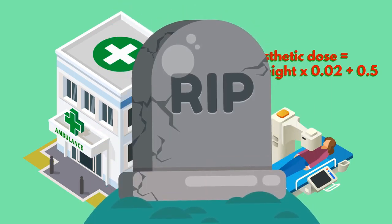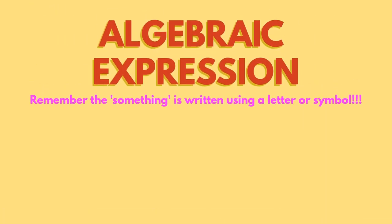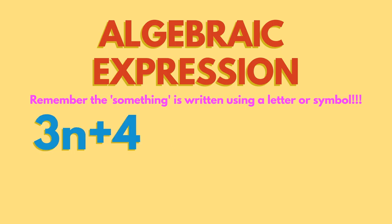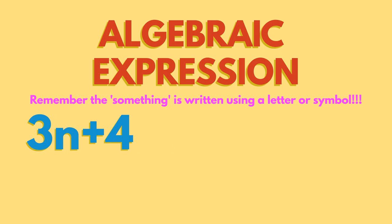Let's have a look at an algebraic expression. If you want to multiply something by 3 and then add 4 to the result, it can be written as 3n plus 4. If you want to multiply something that is squared by 4, then add 4, then divide the result by 2,